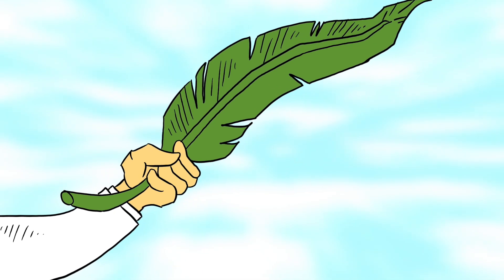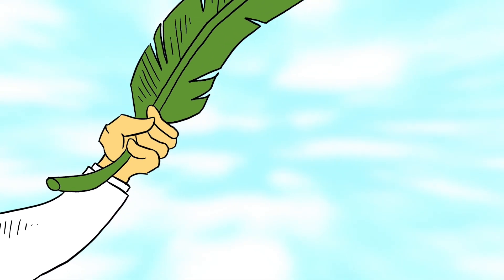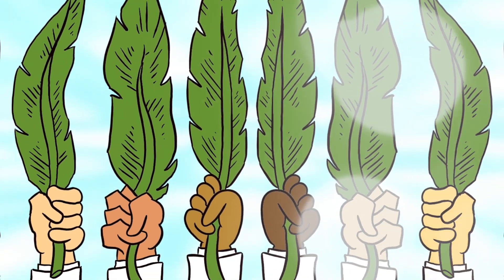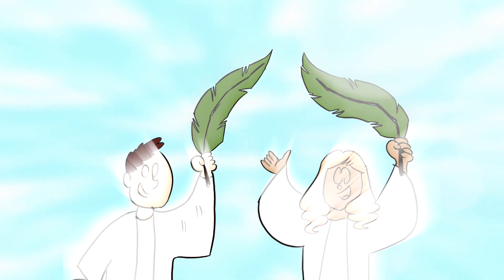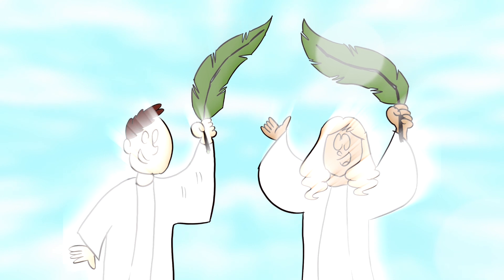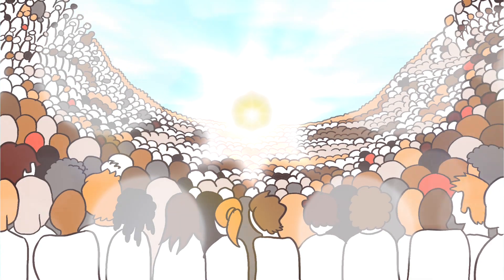They were clothed in white robes and held palm branches in their hands. And they were shouting with a great roar, salvation comes from our God who sits on the throne and from the Lamb.